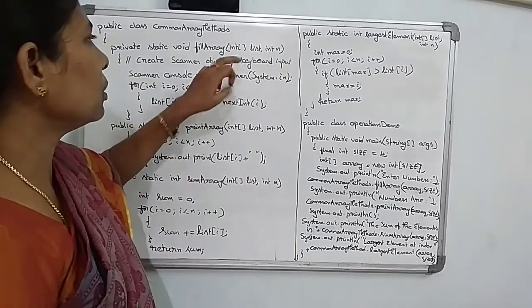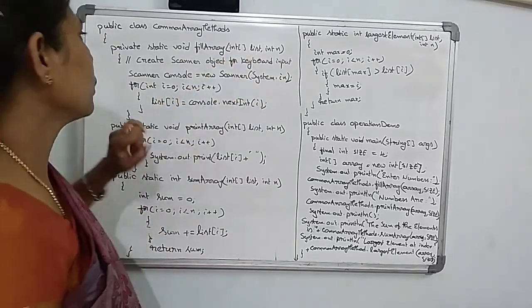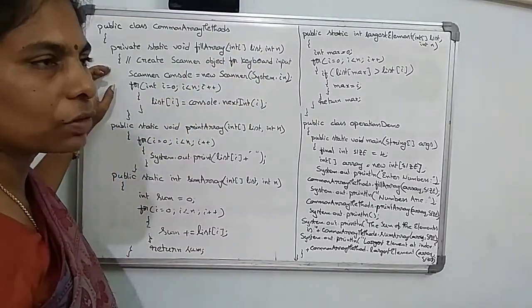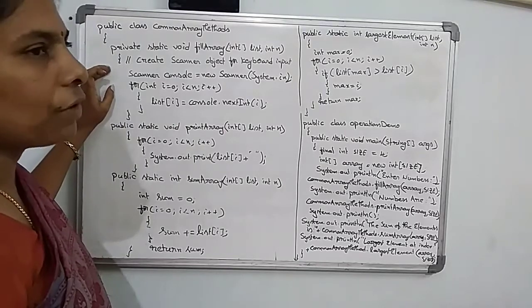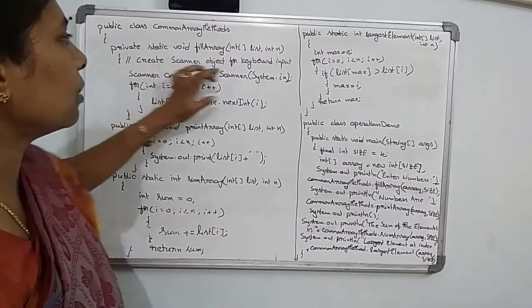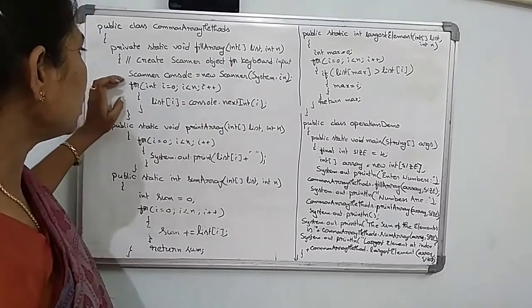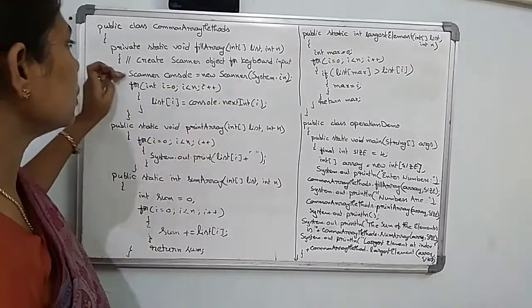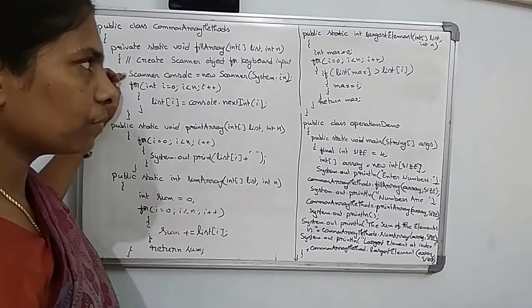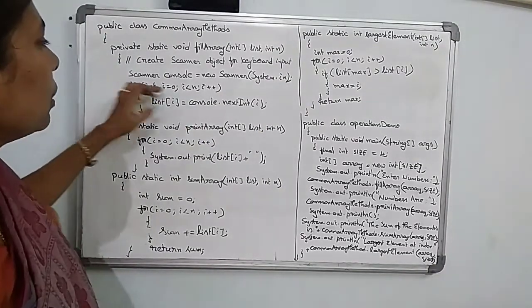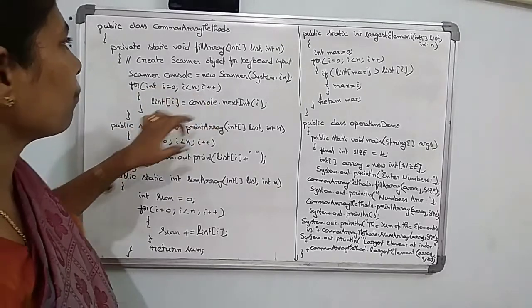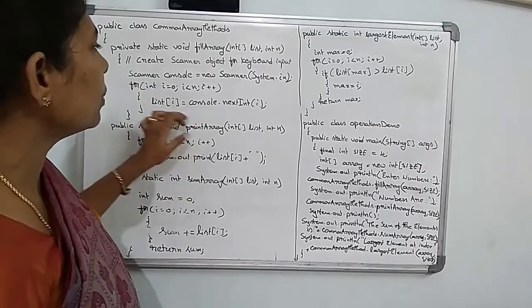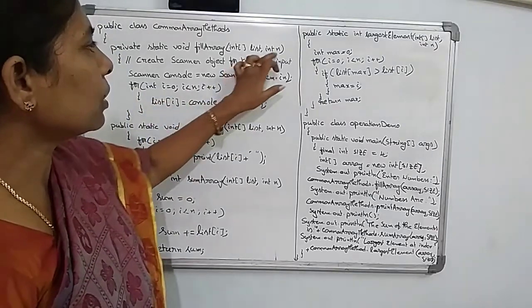The array stores elements in a list. We create a scanner object for keyboard input — to read elements through the keyboard, we use the scanner object: Scanner console = new Scanner(System.in). Then, using a for loop — for(int i=0; i < n; i++) — list[i] = console.nextInt(), reading all elements until the array is complete.